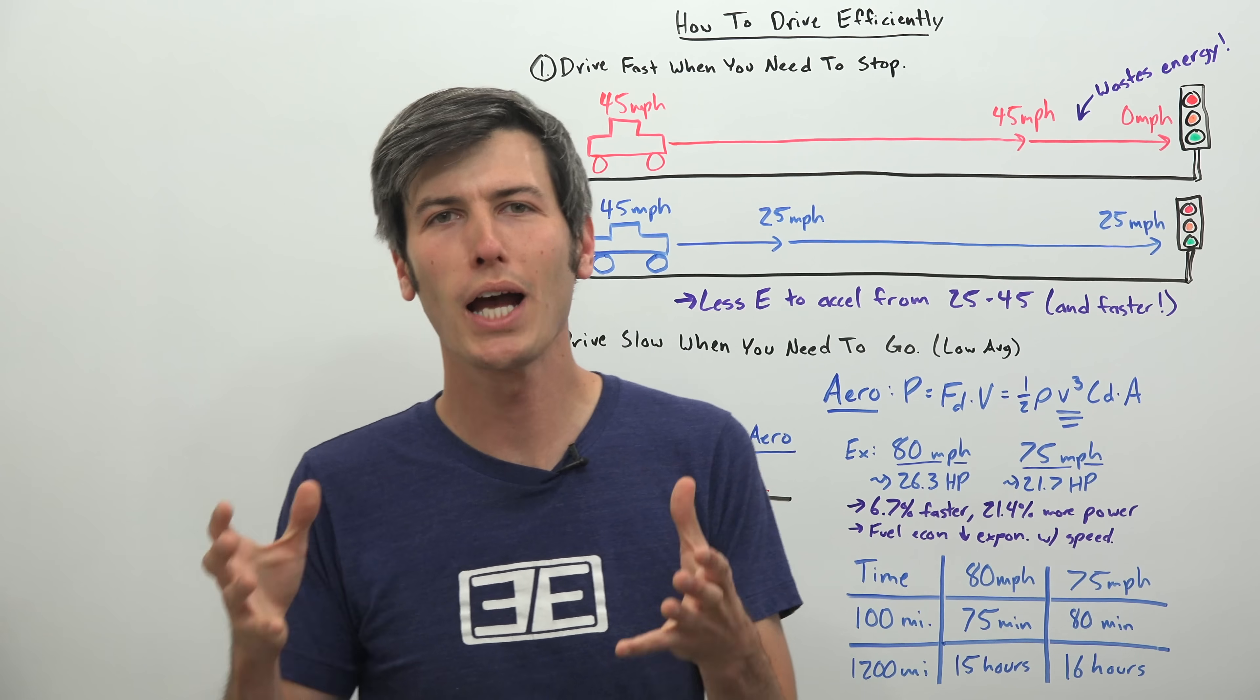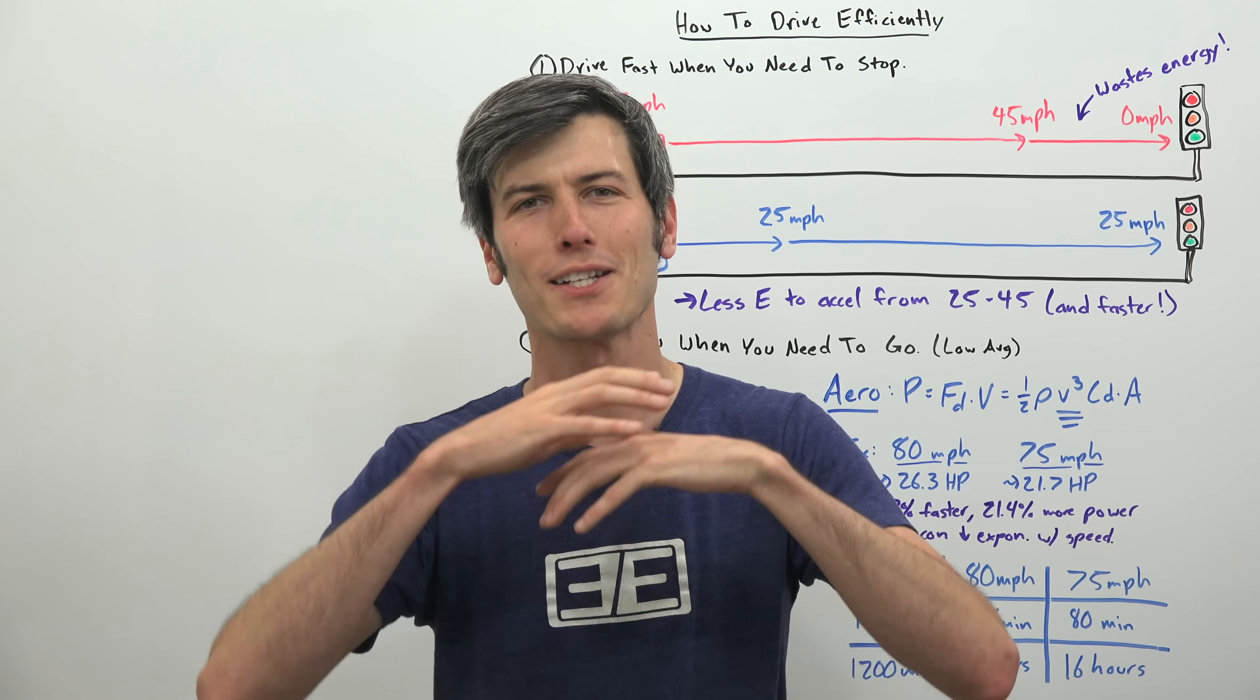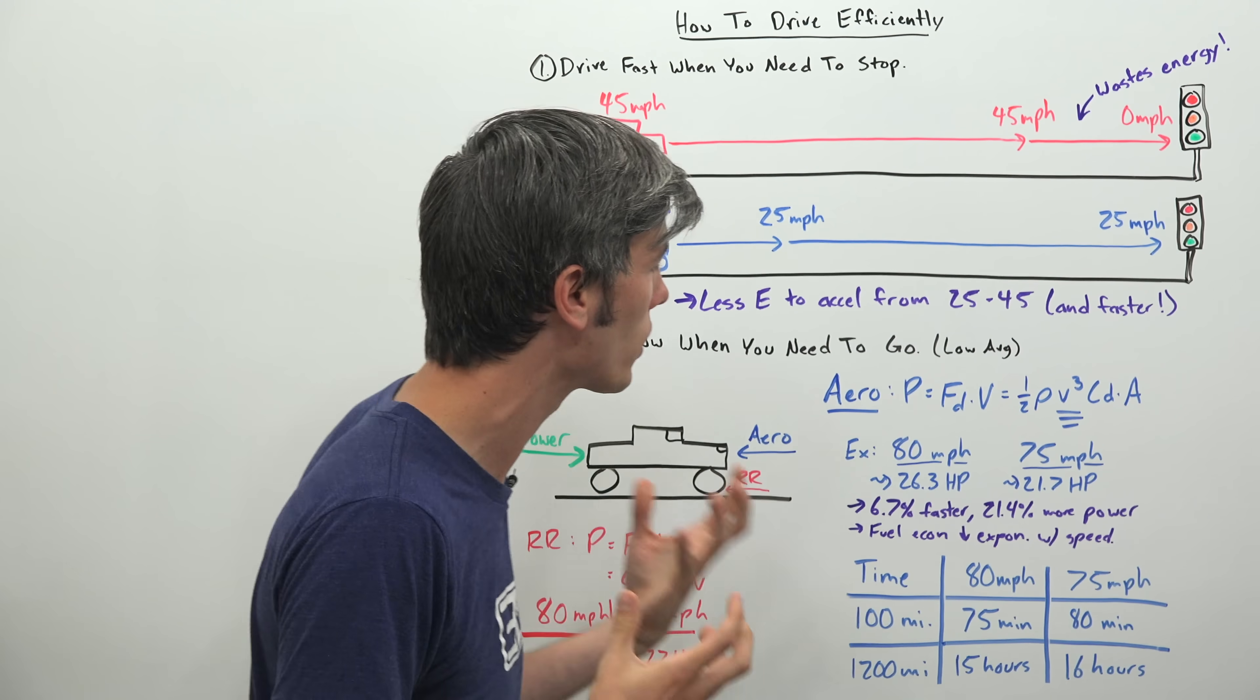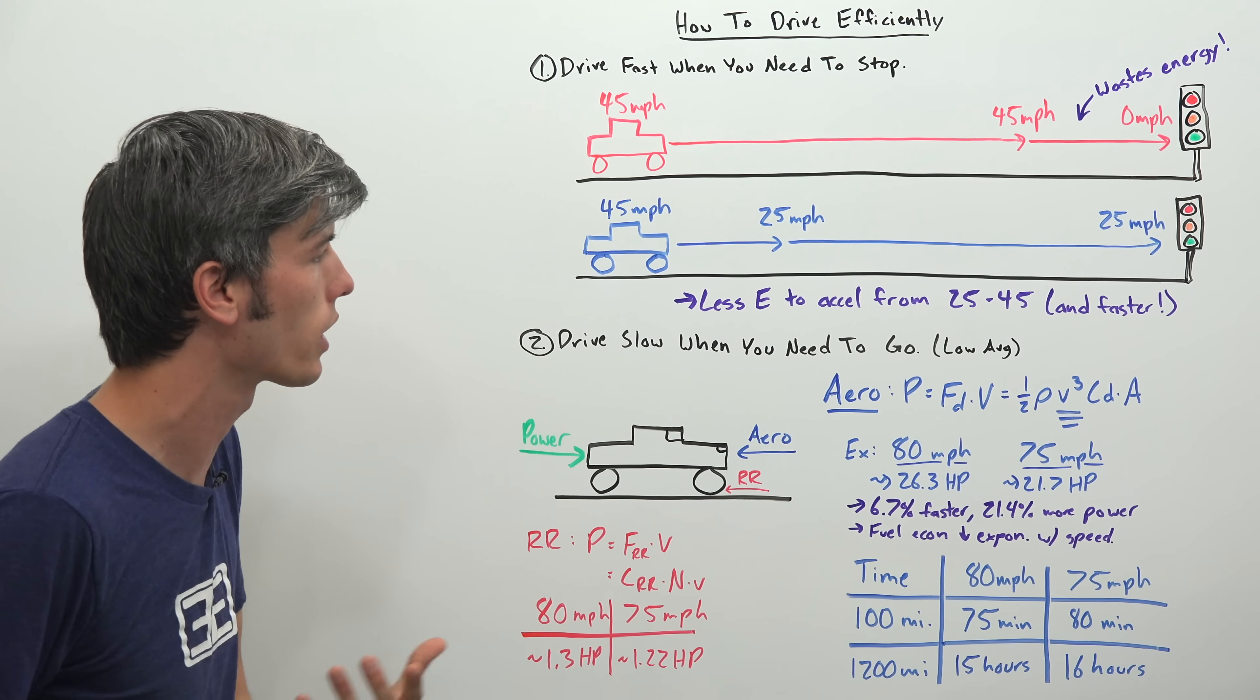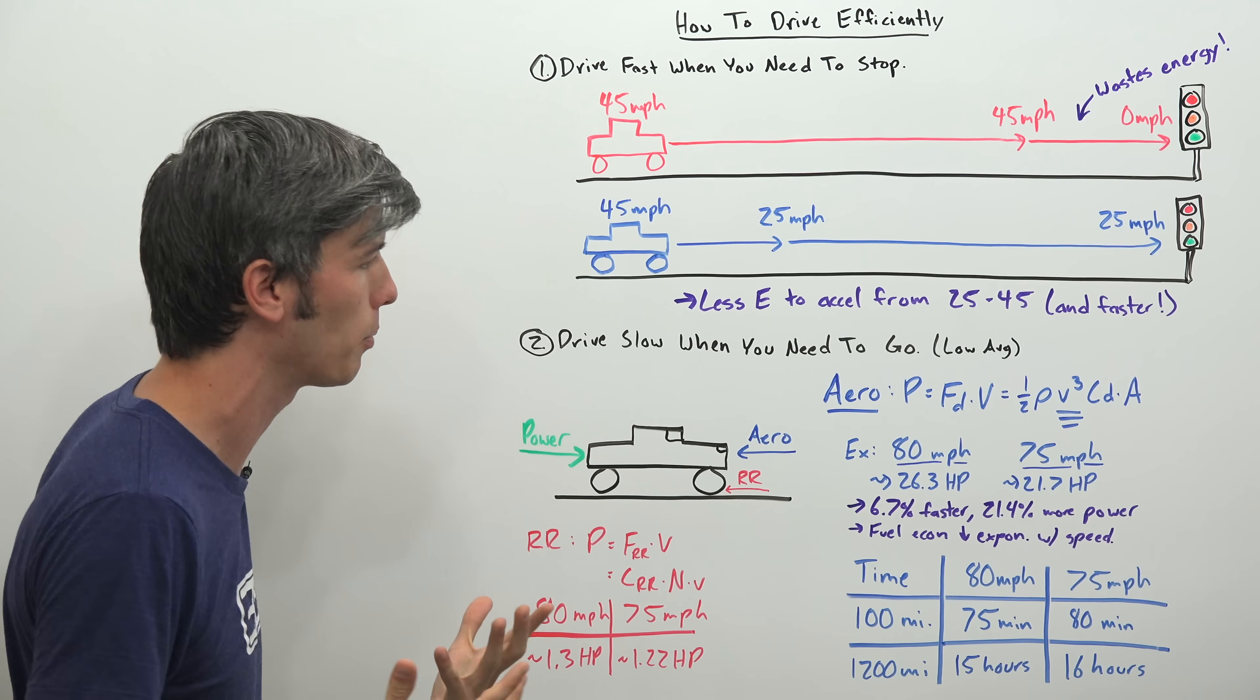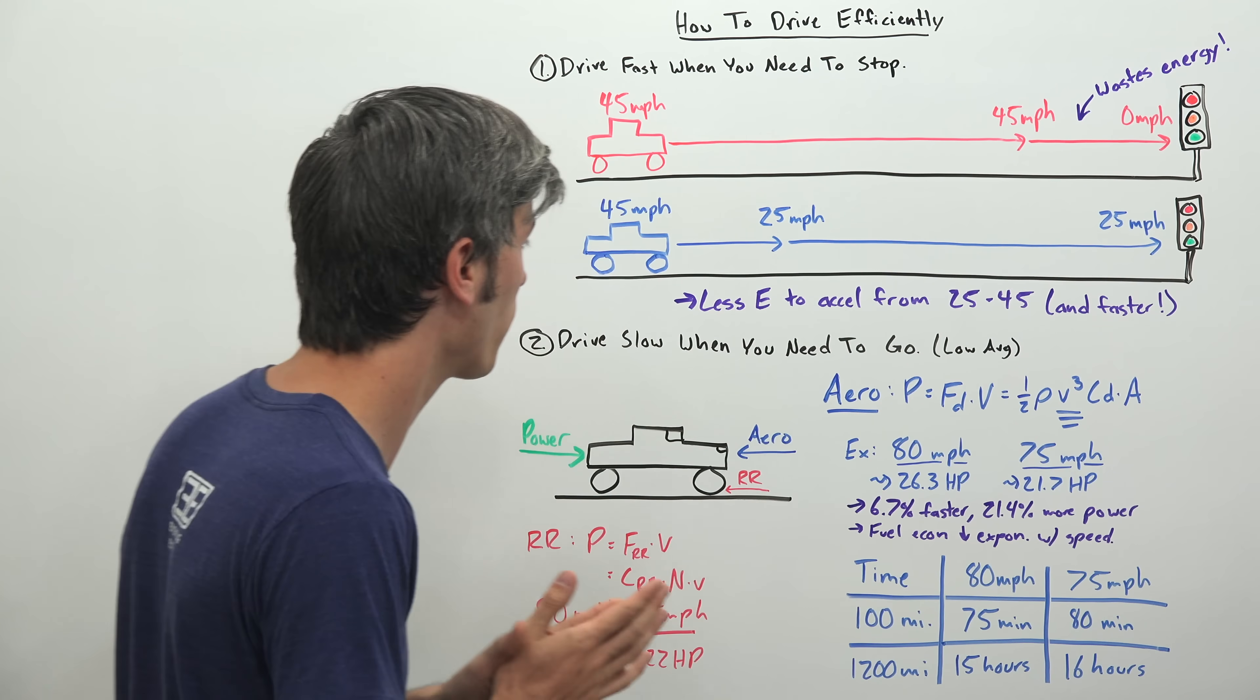Now our second point is drive slow when you need to go, meaning maintain a low average speed. And I'm not saying you should just drive slowly everywhere. Obviously none of us have time for that. But what I'm saying is there actually can be a major difference in fuel economy simply by slightly reducing your average speed. So we're going to take an example here looking at a car on the highway traveling at 80 miles per hour versus 75 miles per hour.